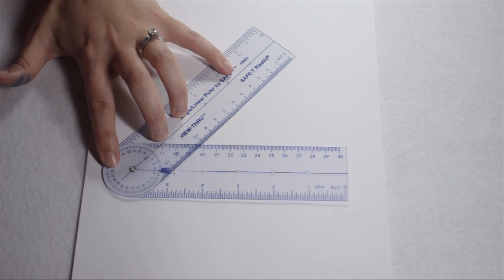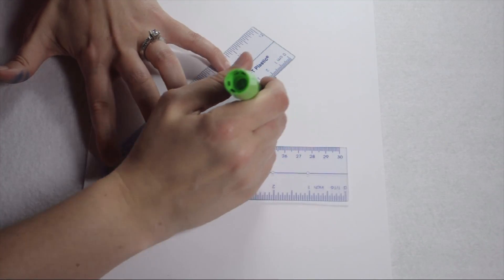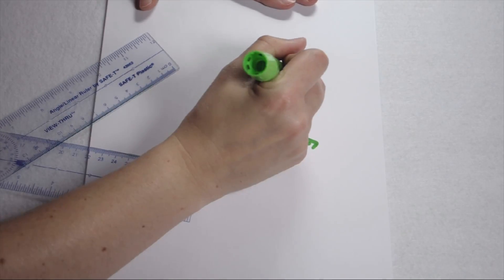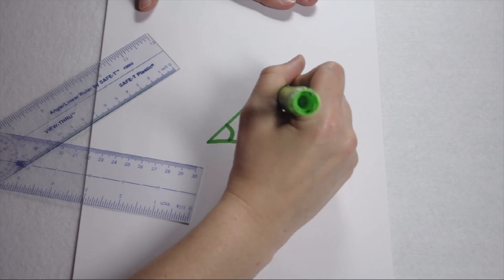Now that I have my angle ruler set at 50 degrees, I can simply trace the inside of my angle and label it to show I measured the acute angle of 50 degrees.